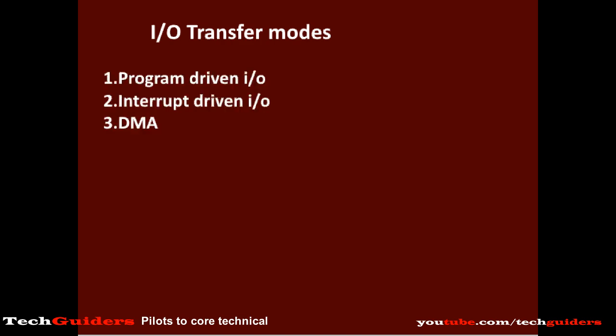One is program-driven I/O, then interrupt-driven I/O, and direct memory access or DMA. In program-driven I/O, the processor is completely involved in the I/O operation. In interrupt-driven I/O, we reduce the overhead to the processor. And in direct memory access, the processor is further relieved.